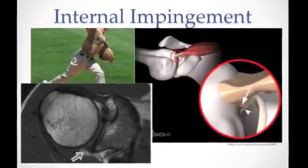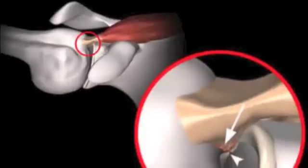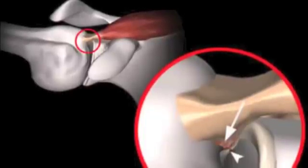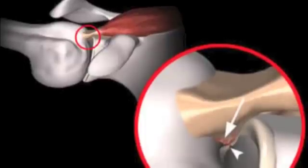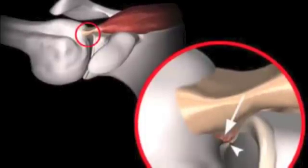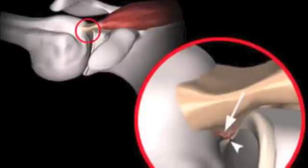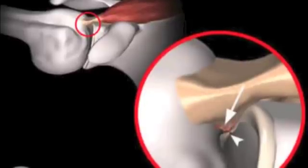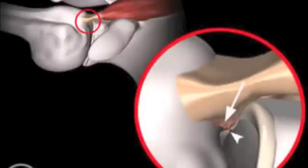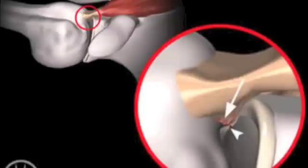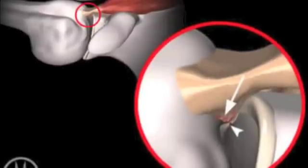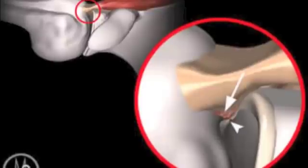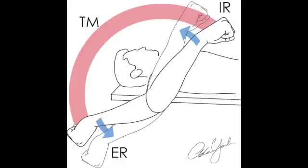Internal impingement is also common in throwing athletes. In external rotation and abduction, there can be a pinch or friction of the inferior aspect of the rotator cuff between the humerus and the glenoid, causing underside fraying. The superior labrum and undersurface of the rotator cuff can rub together, described as a kissing lesion. Some also include the biceps tendon, which connects to the superior labrum. Throwing athletes have been shown to have increased external rotation on the throwing side, which can increase susceptibility to this pathology. As a throwing athlete fatigues through a season, internal rotation has been shown to decrease and external rotation to increase, so it is important to maintain their baseline arc of motion.